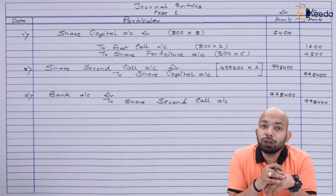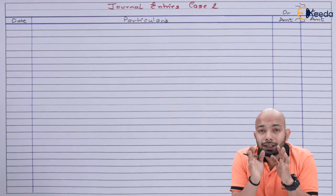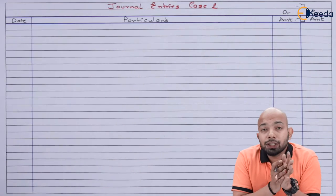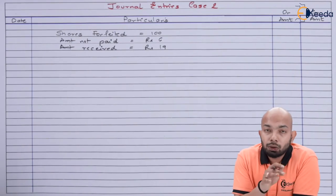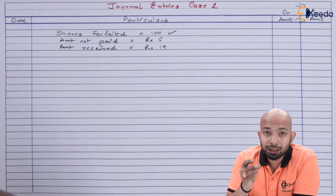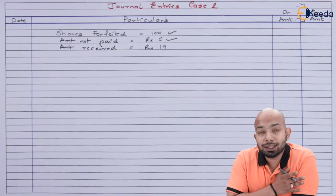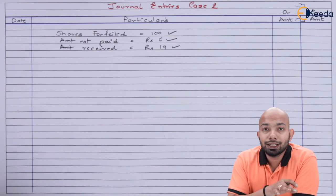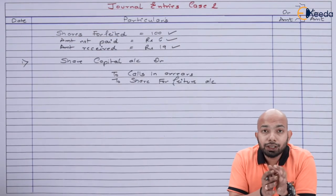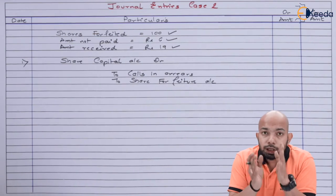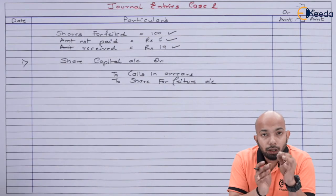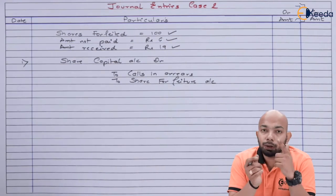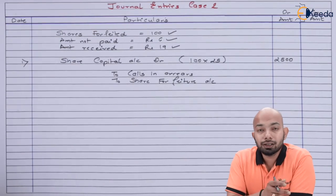For Case 2 — X Limited — we only need to pass the forfeiture entry. Working details: shares forfeited = 100; amount unpaid = second call of ₹6; amount already received per share = ₹19. The entry is: Share Capital Account Dr. to Share Forfeiture Account and Calls in Arrears Account. Share Capital is debited at 100 shares multiplied by ₹25 (fully called-up) = ₹2,500. Calls in Arrears is credited for the unpaid second call amount.